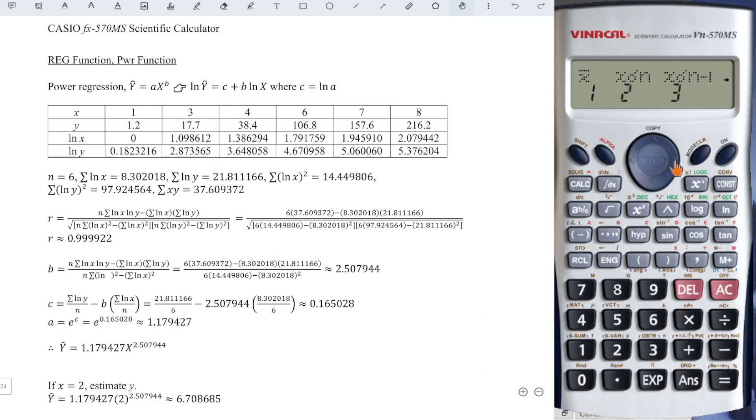We just have to press the right button until we see A, B, R. So R is the correlation. We press 3 and we press equal. Then we will obtain the correct value.